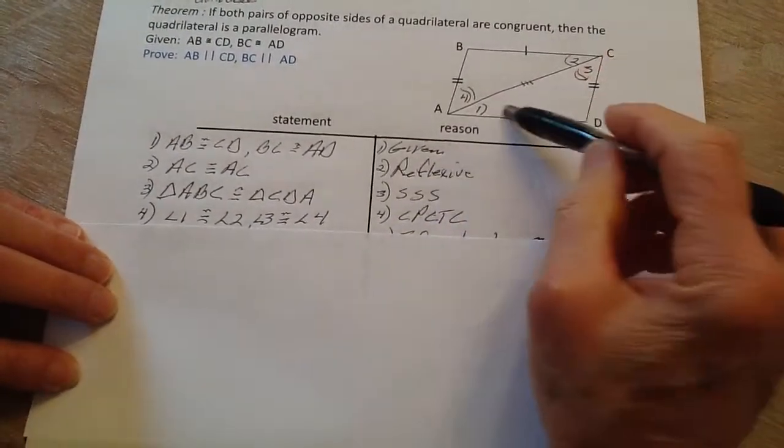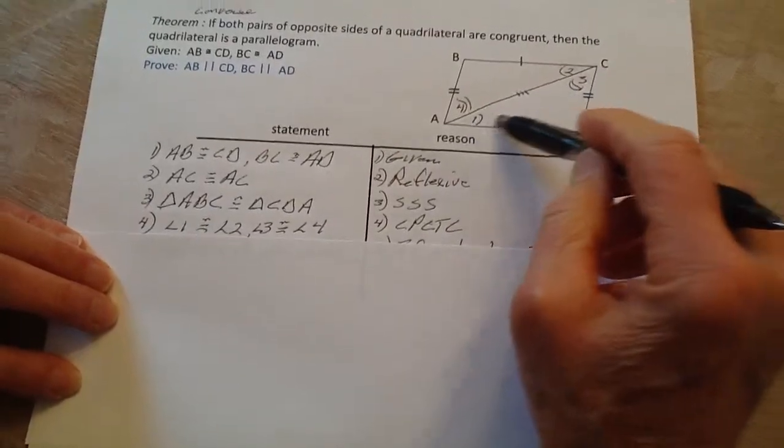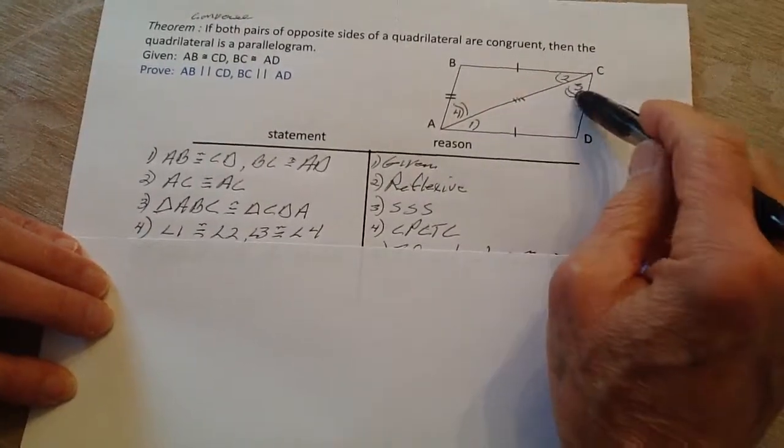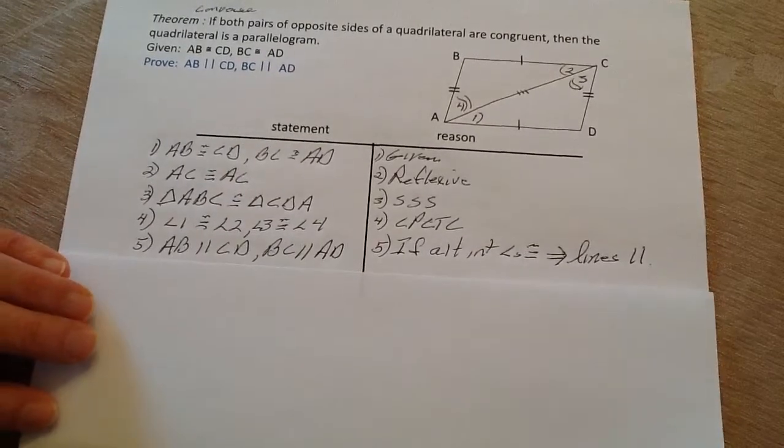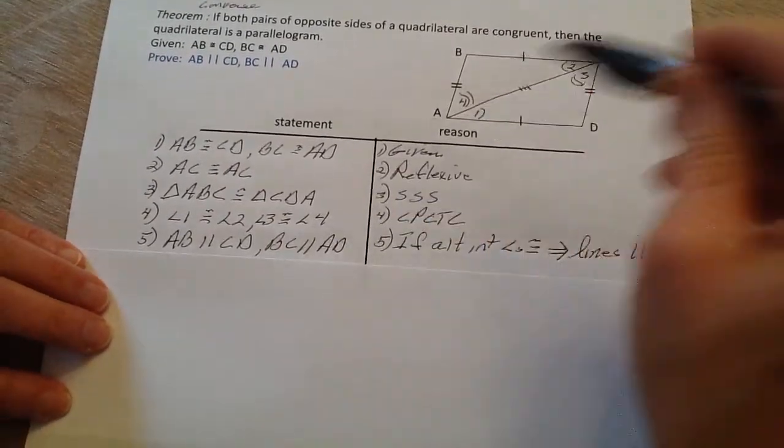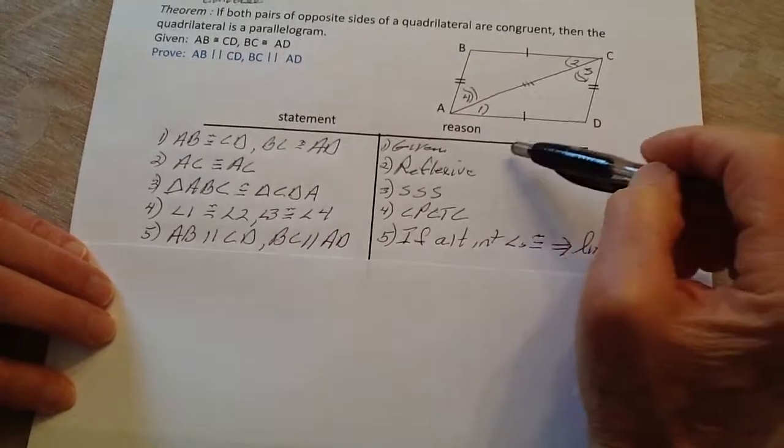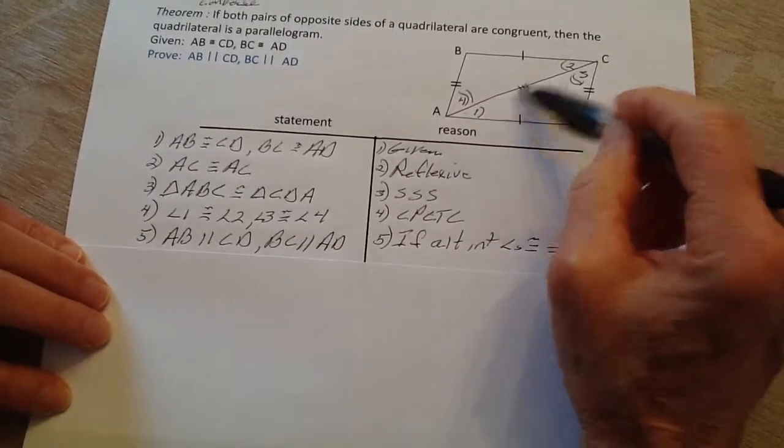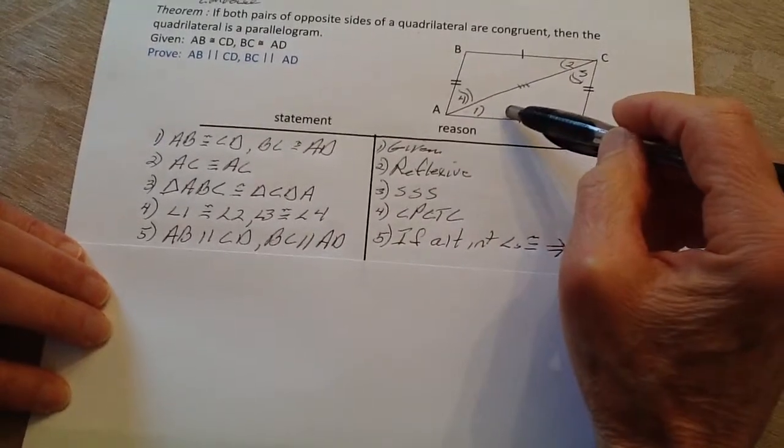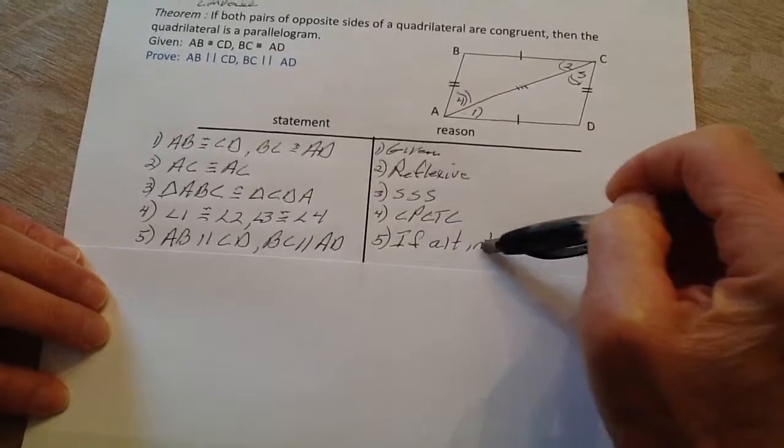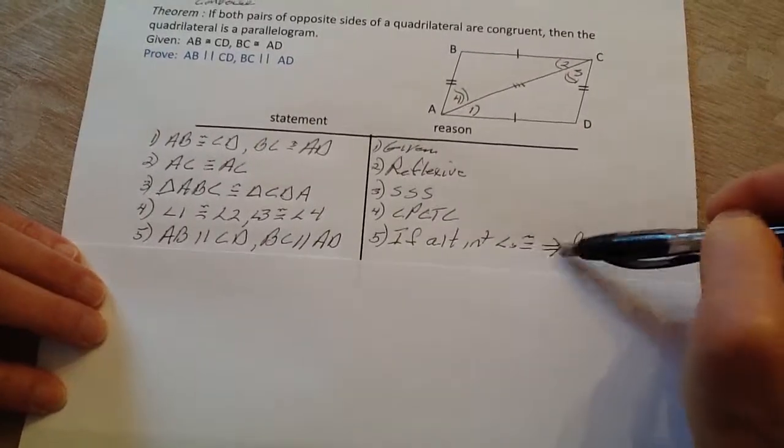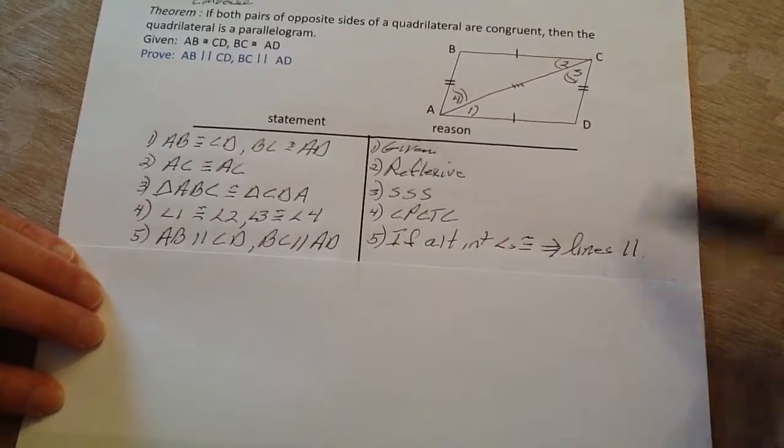Now, if these angles, because of the corresponding parts, one and two are equal and three and four are equal, then we remember that the lines have to be parallel, because if you've got alternate interior angles that are congruent, then the lines are parallel.